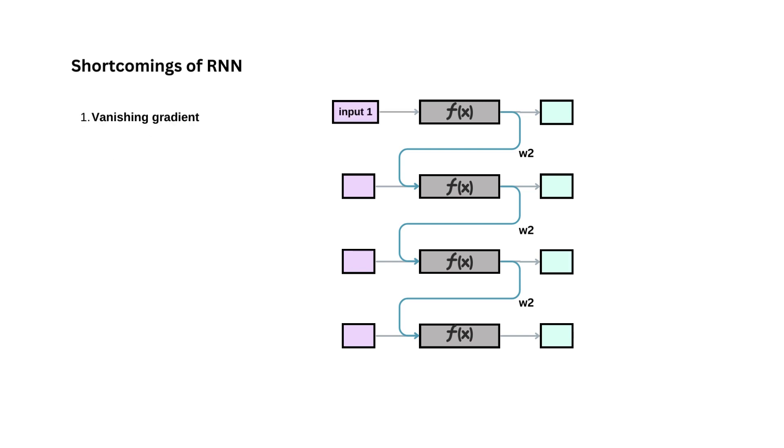Now, let's see the vanishing gradient problem. Say, for the first time step, we have input 1 as n. This input will produce an output which will then be multiplied by W2 and given to the next time step. Here, the value of W2 is, say, 0.1. So, as the RNN unfolds, input 1 gets multiplied by 0.1 many times.